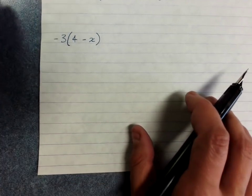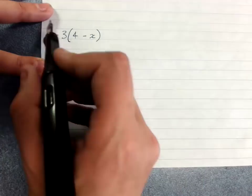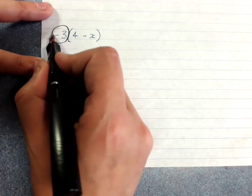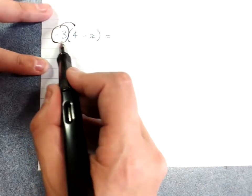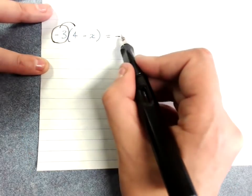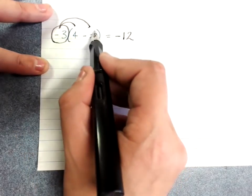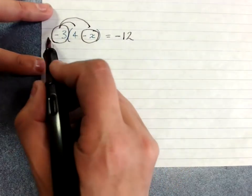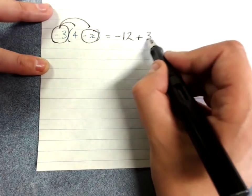Negatives get involved. Negative 3 outside of 4 minus x. We're going to multiply that whole negative 3 by 4. Negative 3 times 4 is negative 12. Negative 3 times negative x, negative times a negative is positive. 3 times x is 3x.